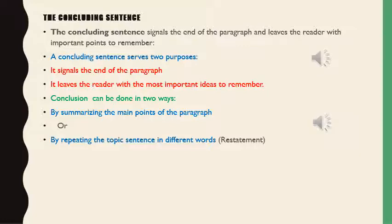To summarize: if asked about the purpose of the concluding sentence, say it signals the end of the paragraph and leaves the reader with the most important ideas. If asked how to make a conclusion, say you can do it in two ways: number one, summarizing the main important points mentioned throughout the paragraph; number two, repeating the topic sentence with changed words — that is, restatement of the topic sentence.